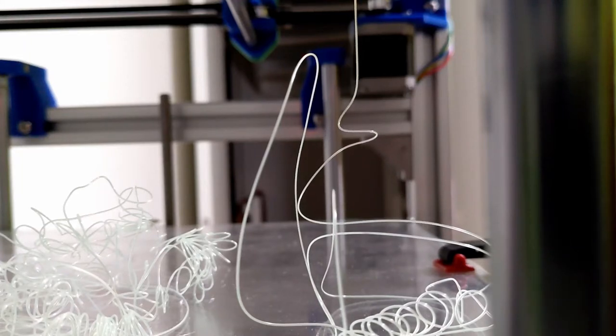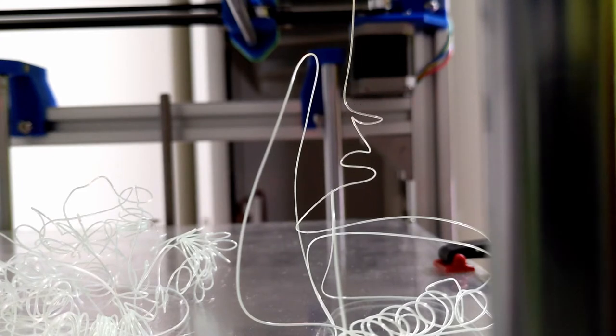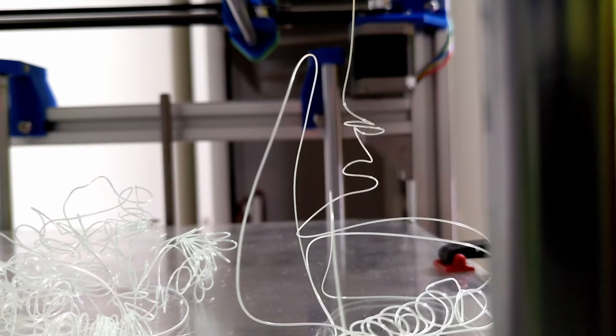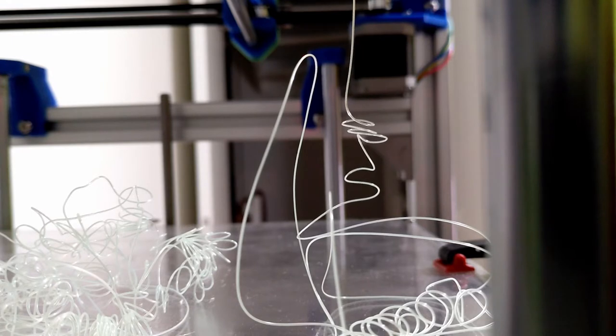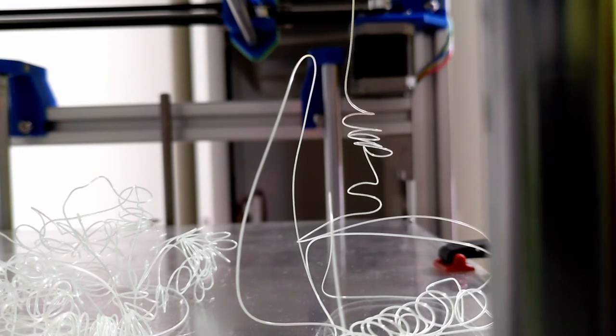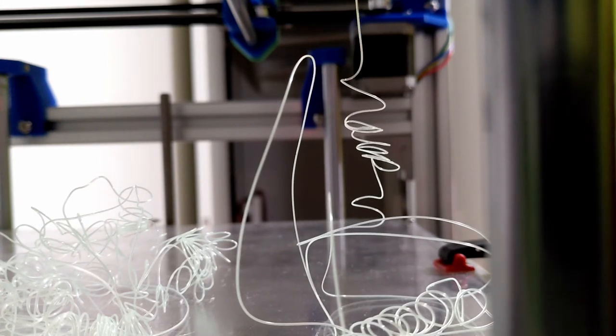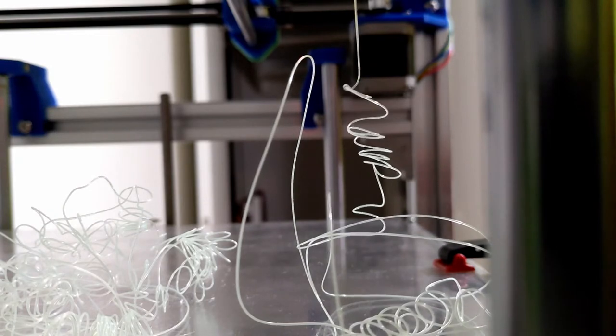Right now the printer is extruding at the minimum speed of 2.5 cubic millimeters per second to have a reference value at which the slipping between extruder gear and filament should be negligible.